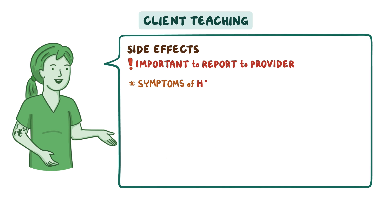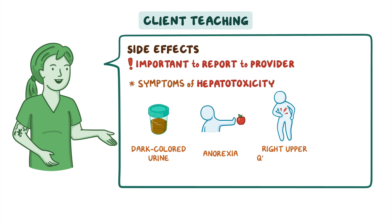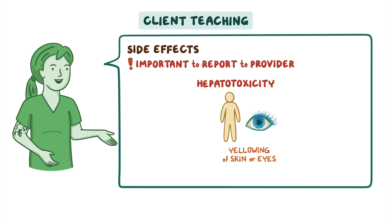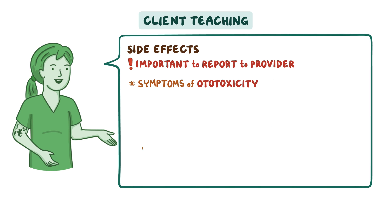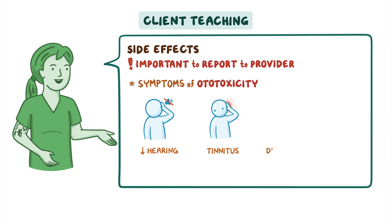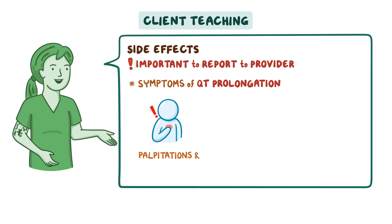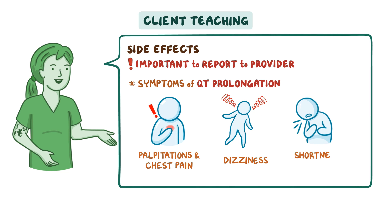Instruct clients to also report symptoms of hepatotoxicity such as dark-colored urine, anorexia, right upper quadrant pain, clay-colored stools, or yellowing of their skin or eyes. They should also report symptoms of ototoxicity such as decreased hearing, tinnitus, or dizziness, as well as symptoms of QT prolongation, which could manifest as palpitations, chest pain, dizziness, or shortness of breath.